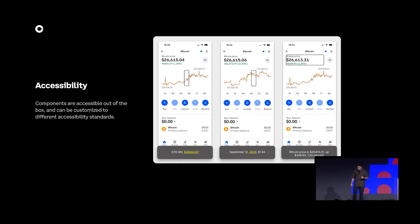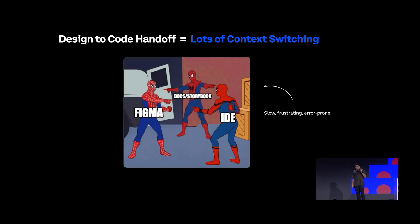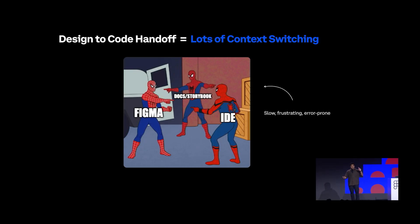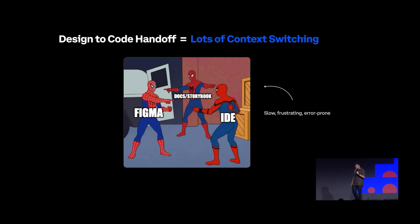Now let's talk about what the current design-to-code handoff looks like. As an engineer, you're handed a Figma link by your designer, you open Figma, find all the components being used, then hop over to the documentation website to find import paths and examples — all while switching in and out of the IDE. As you can see, there's a lot of context switching happening here, resulting in a slow, frustrating, and error-prone design-to-code process.